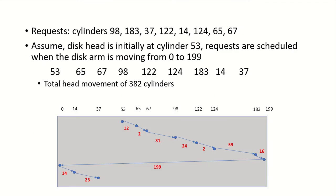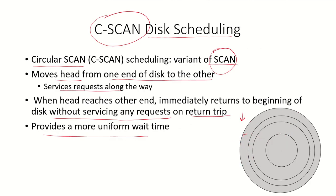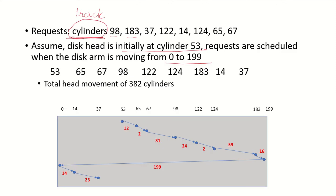We will take the same example used for FCFS and the SCAN disk scheduling algorithms. The requests are for cylinders 98, 183, and so on. Assuming that you can check the earlier video on hard disks if you're unsure what cylinders are — let's assume this refers to a particular track on a particular platter. The disk head is initially at cylinder 53, and the requests are scheduled when the disk arm is moving from 0 to 199. Currently the head is at 53, with 0 as the outermost and 199 as the innermost track.